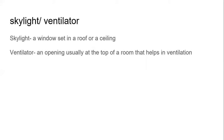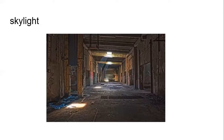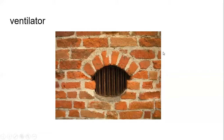Skylight and ventilator. So what's a skylight? It's a window set in a roof or a ceiling. And a ventilator is an opening, usually at the top of a room, that helps in ventilation. Here's a skylight — you can see it letting the sunlight in. And this is a ventilator.